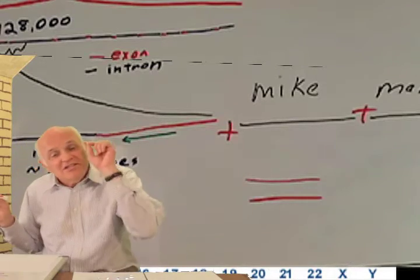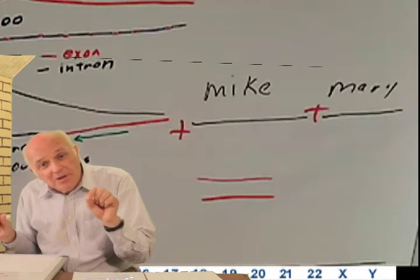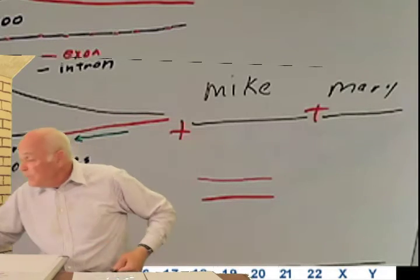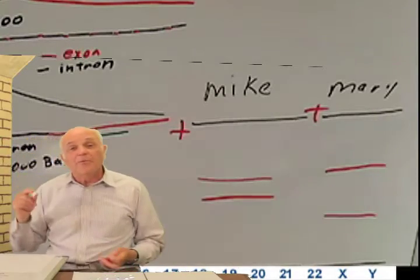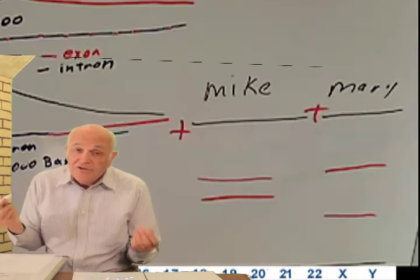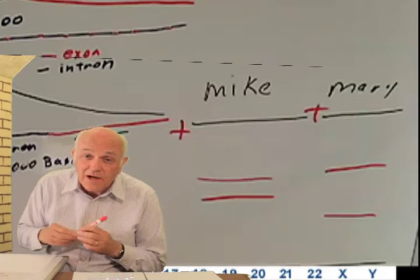We take Mary, do the exact same set of primers on Mary, run the polymerase chain reaction. And we get two different bands for Mary. Again, one from her mother and one from her father. And there is a good probability that they will not be the same as the ones that came from Mike.